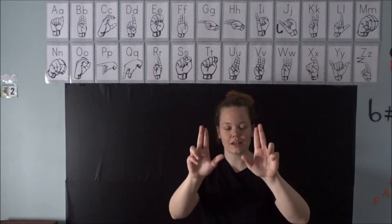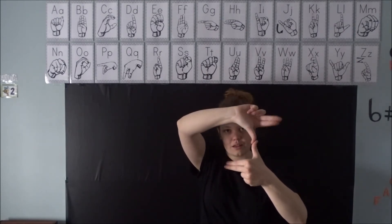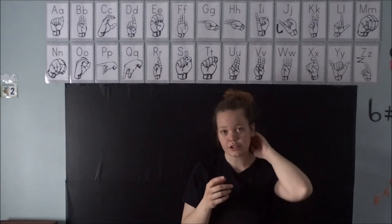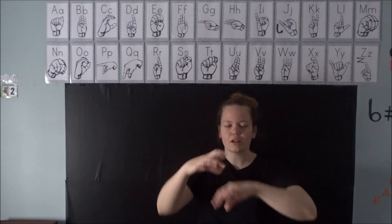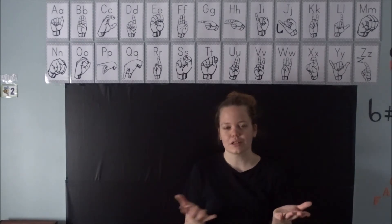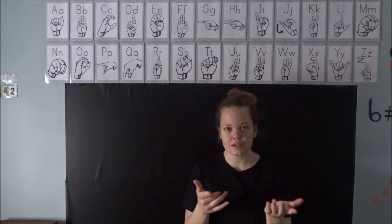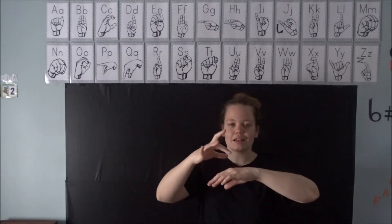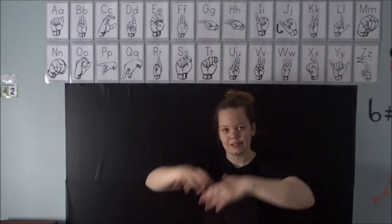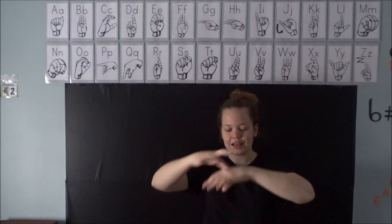Now the next one we are going to learn is hurricane. It is really similar to the tornado except you are going to stick out that middle finger. So that is hurricane. The next one is landslide. A lot of these natural disaster signs are similar in that there are so many different kinds of signs for them — you can sign them using the actual sign or using signs that describe them. For landslide it is earth coming down the side — earth shaking and coming down the side. Landslide.